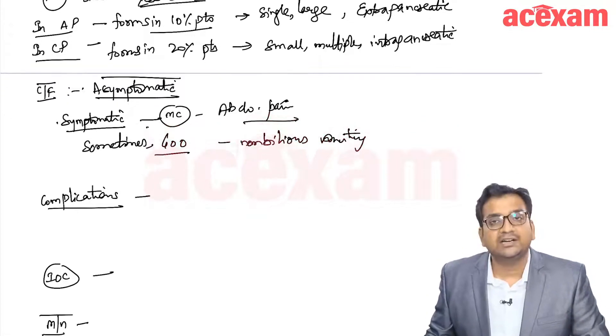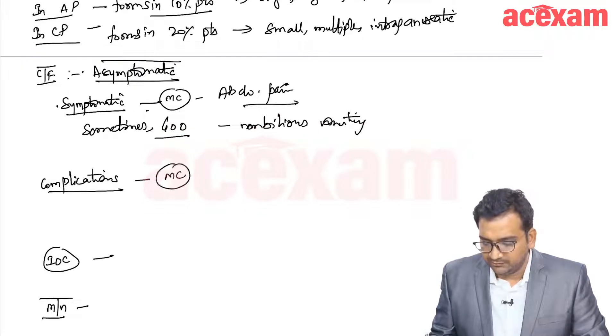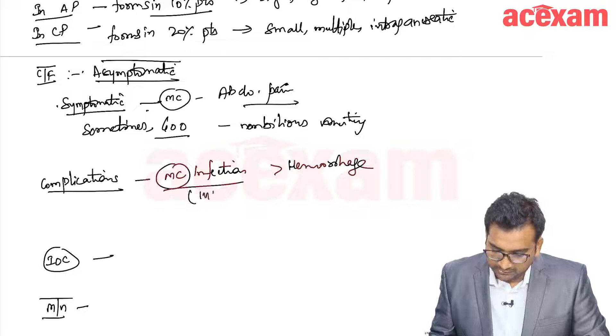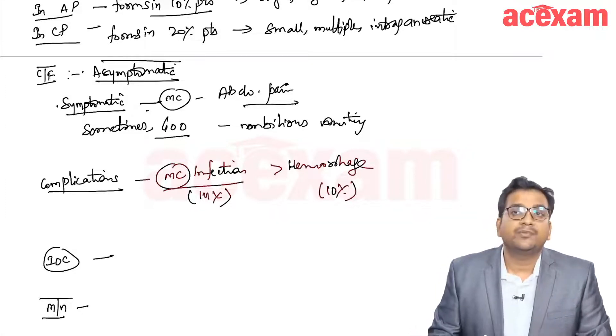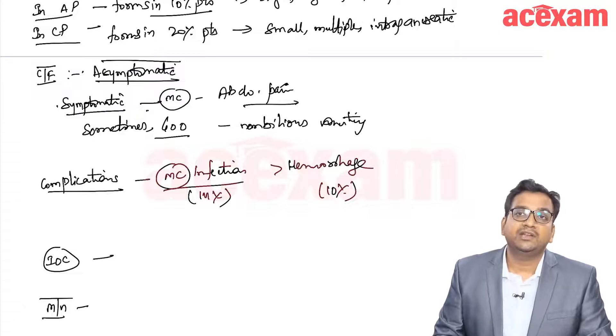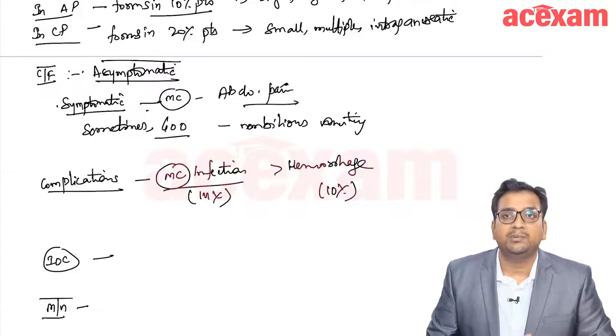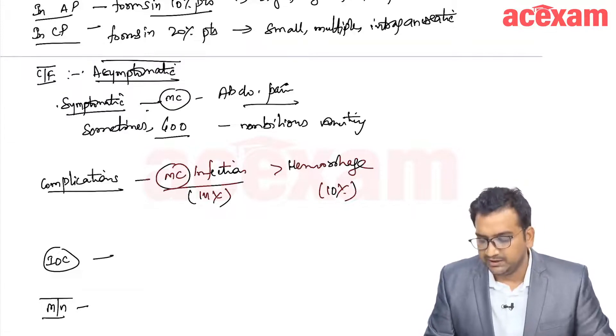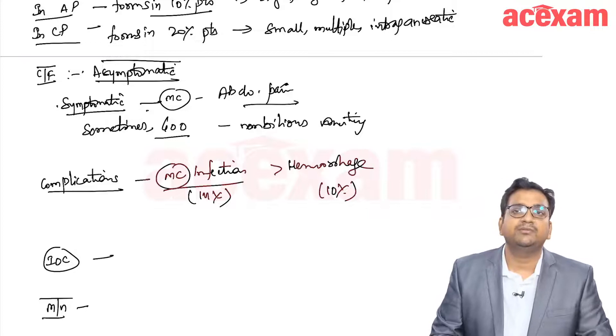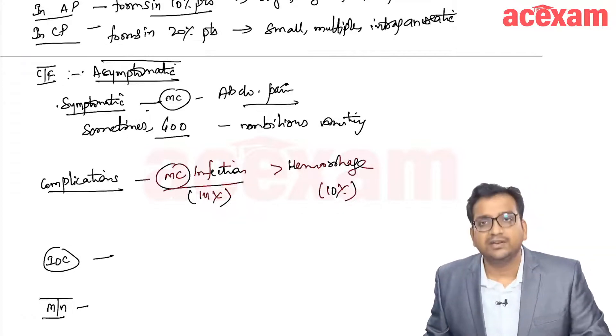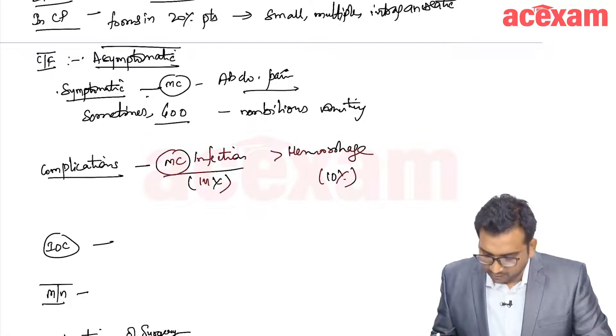What are the complications that can occur? Most common complication is infection of the pseudocyst, followed by hemorrhage. Infection is seen in 14% and hemorrhage is seen in 10%. In case if there is hemorrhage, there will be sudden rise in the size of the cyst with severe pain. If there is fever with chills and rigors, then we can think in terms of infection.